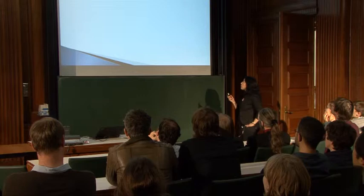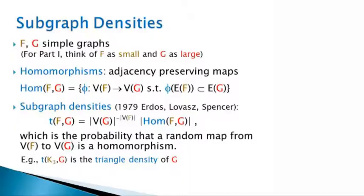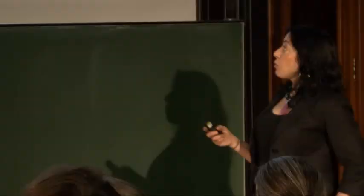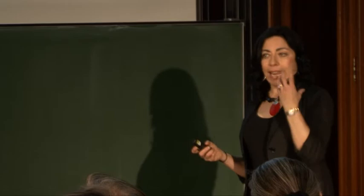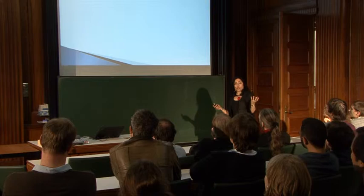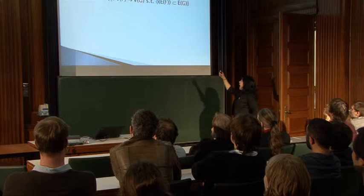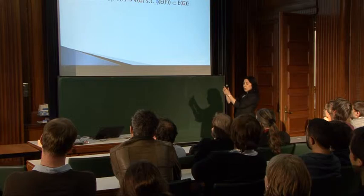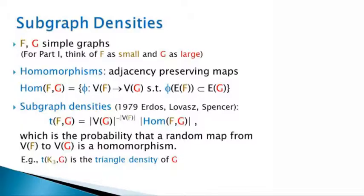The first definition of convergence — the most obvious one to us — involves F and G both being simple graphs. Think of F as something small, like an edge, a triangle, or a four-cycle, and G as some large graph. A homomorphism is a map such that if two nodes have an edge in F, then they have an edge in G.